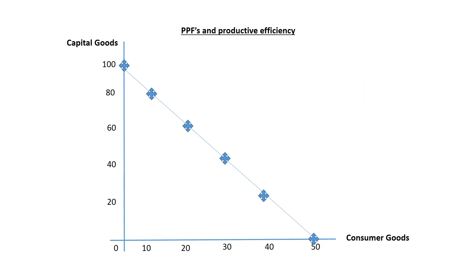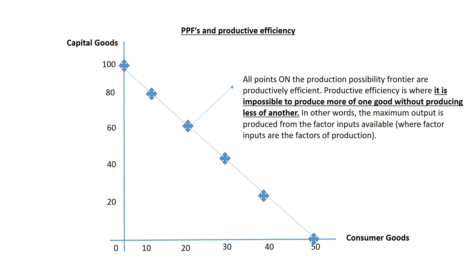You need to understand the relationship between the production possibility frontier and productive efficiency. If a firm or an economy is productively efficient, it means that it is producing the maximum output possible from the factor inputs into the production process. The factor inputs into the production process are your factors of production: capital, enterprise, land, and labour.